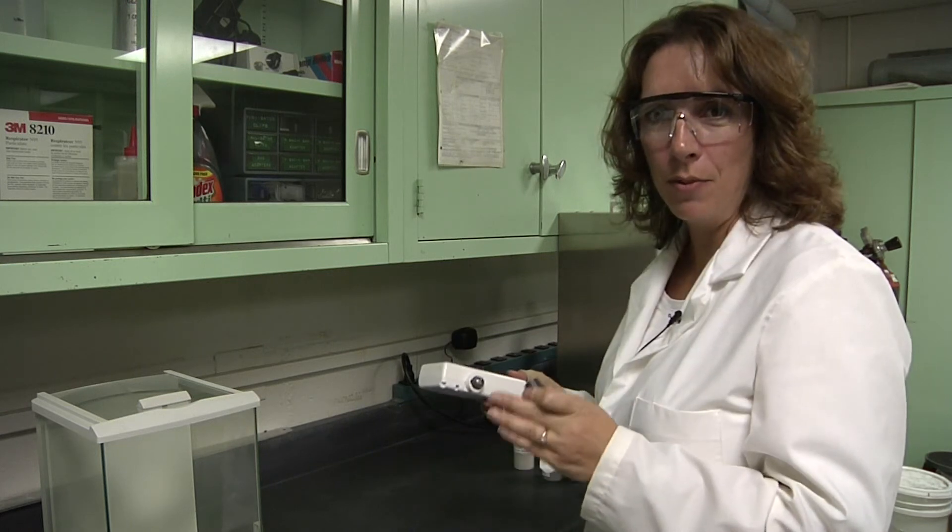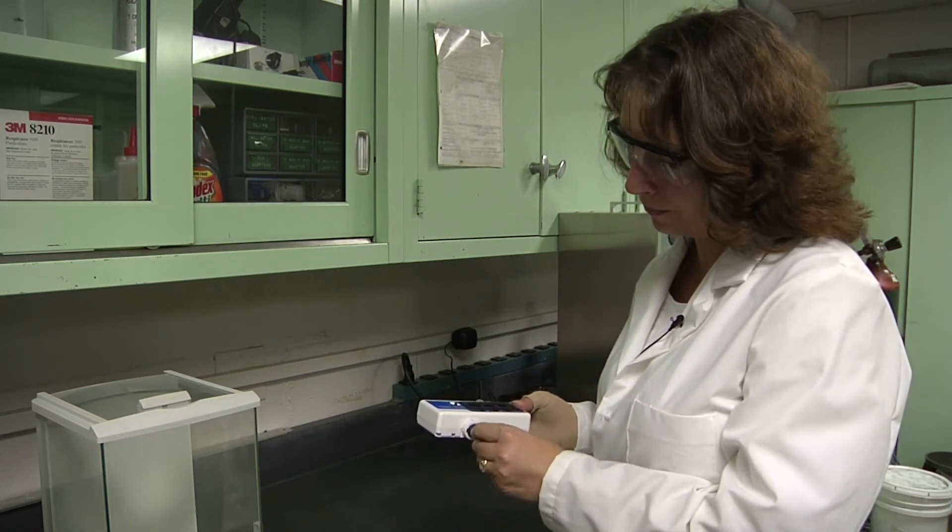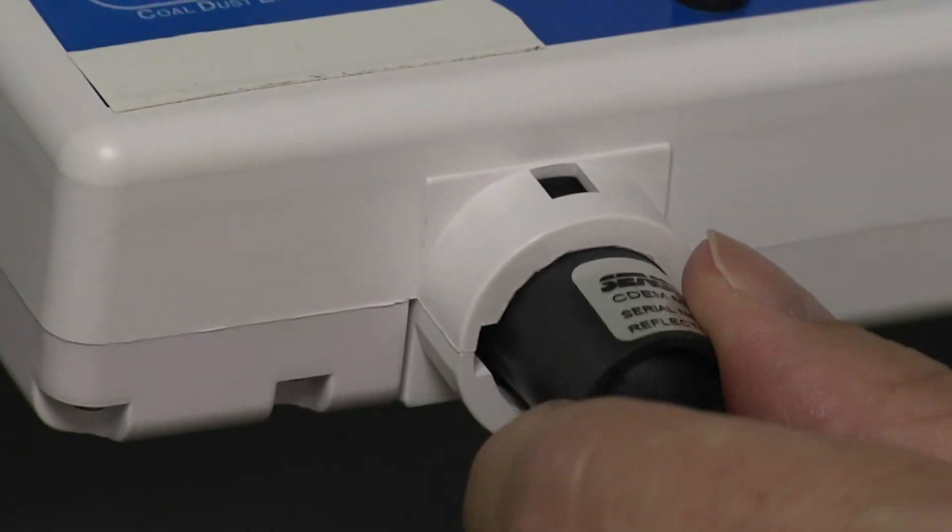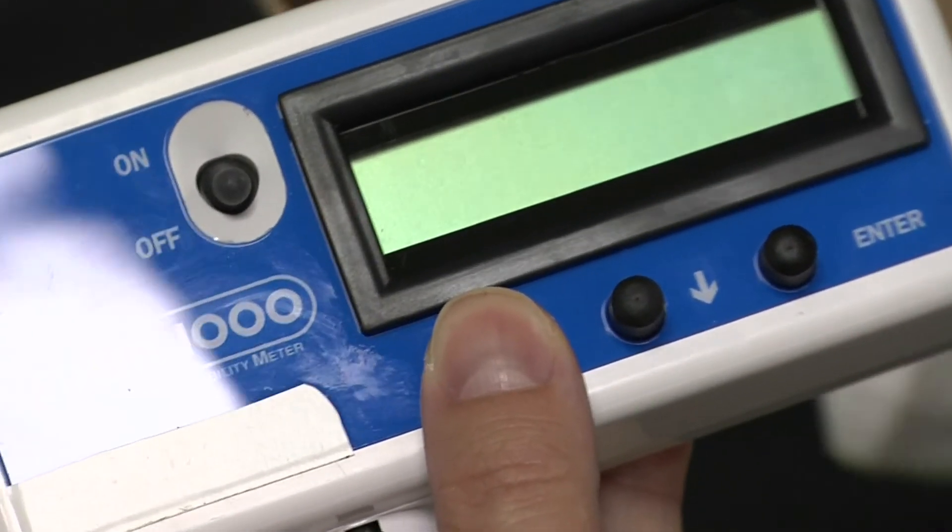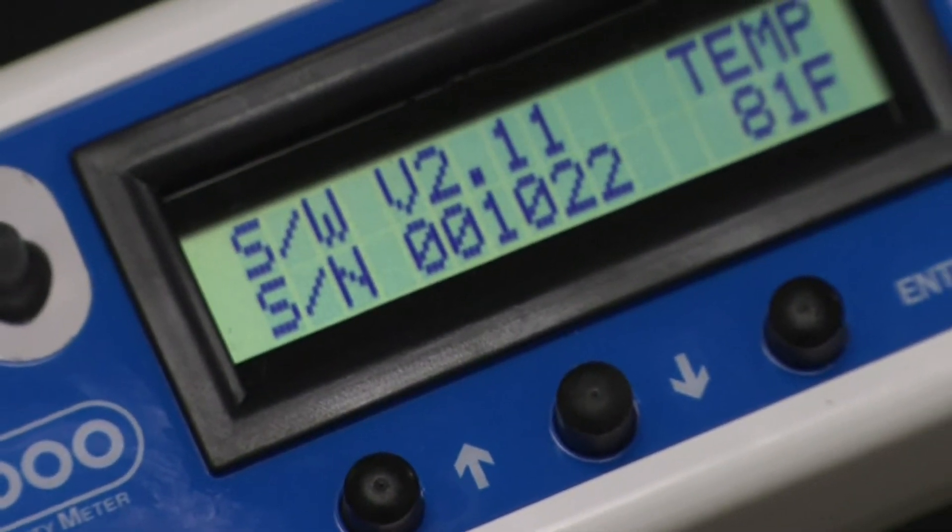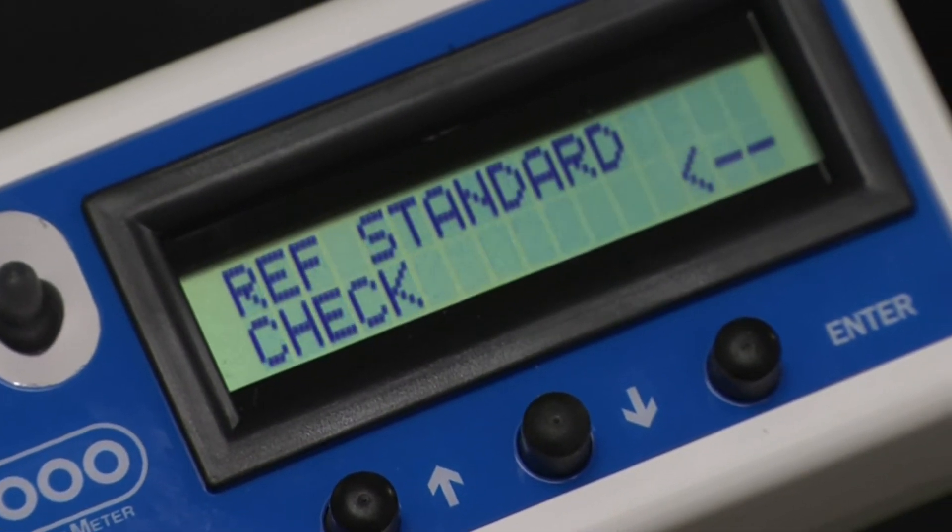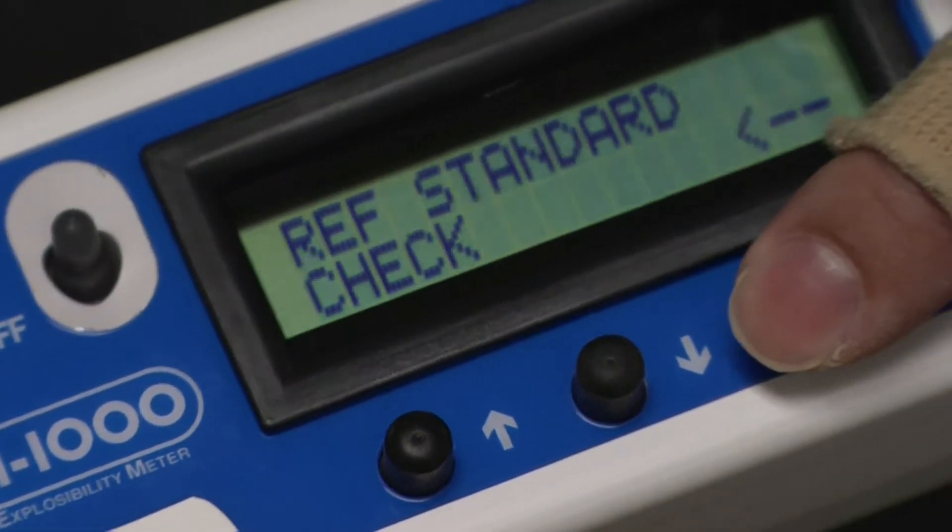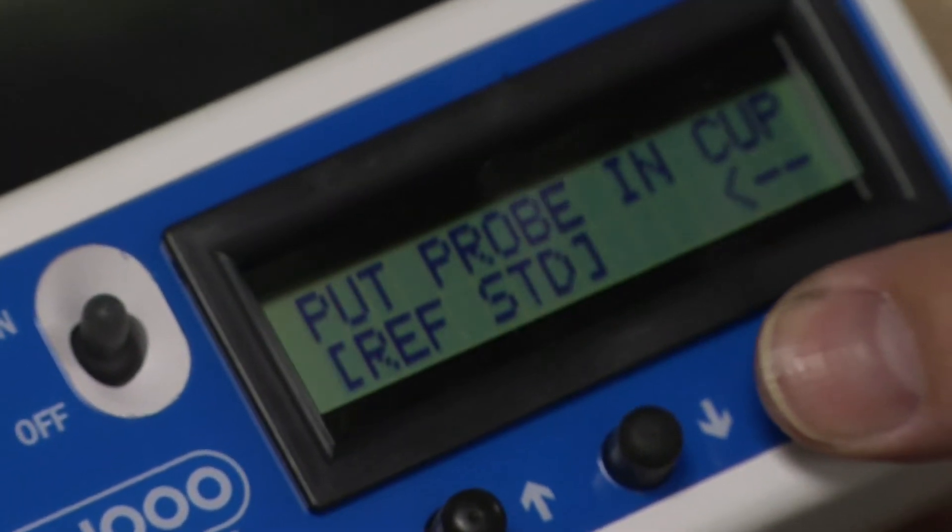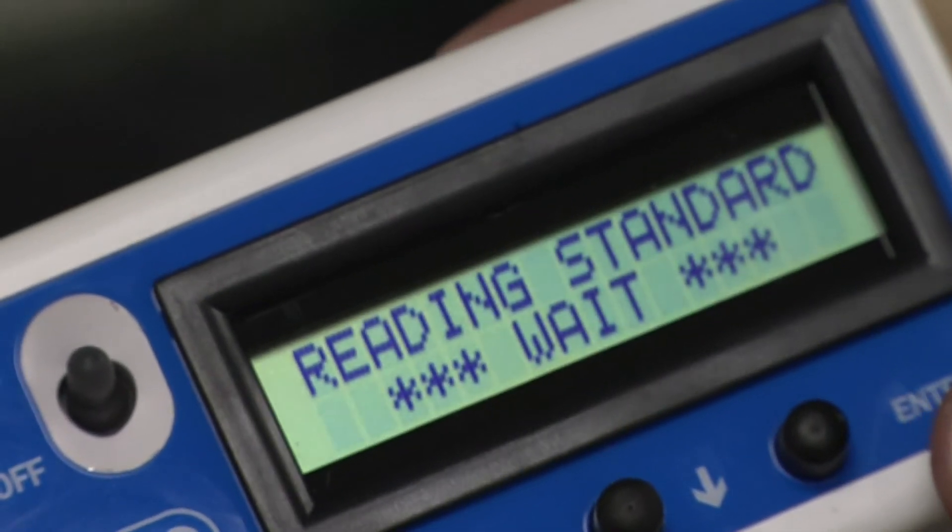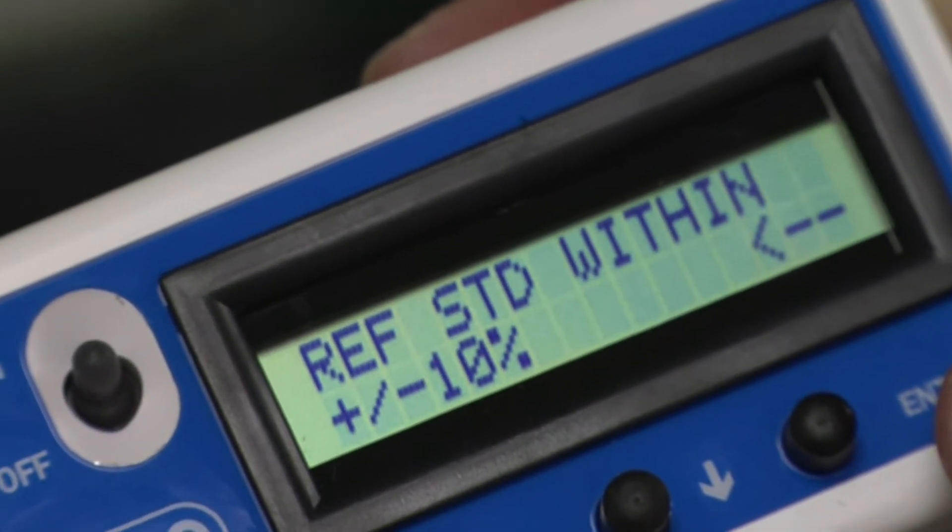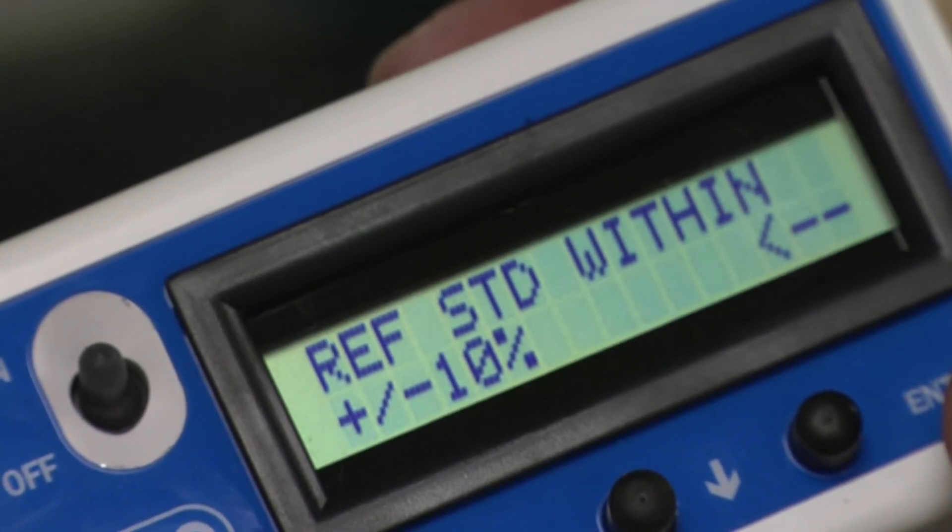To check the meter reflectance, put the cup on the meter and lock it into place. Hold in the up arrow, turn the meter on, reference standard check, enter, put probe in cup, we have done that, enter, reading standard weight, standard check complete, reference standard within plus or minus 10%.